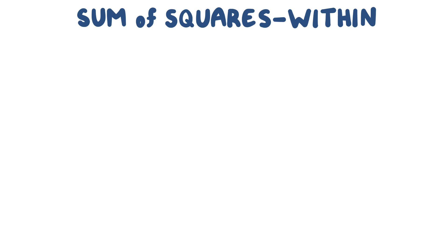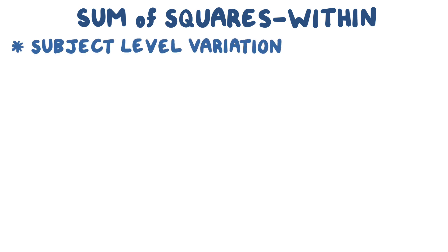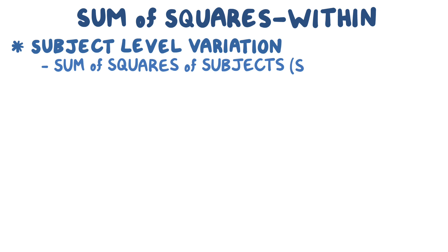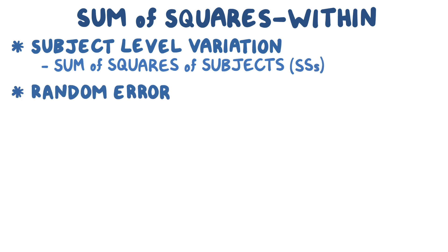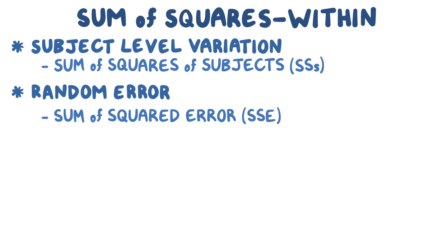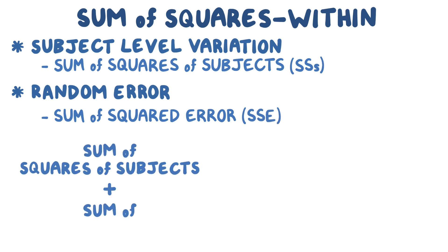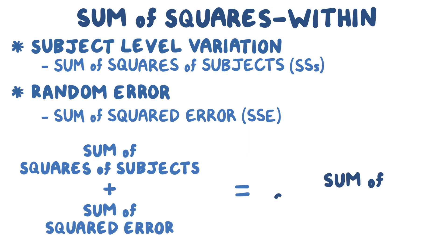To do step 4, we need to know more about the sum of squares within. The SSW is made up of subject-level variation, also called the sum of squares of subjects (SSS), and random error, also called the sum of squared error (SSE). The values for SSS and SSE add up to the value of the SSW.